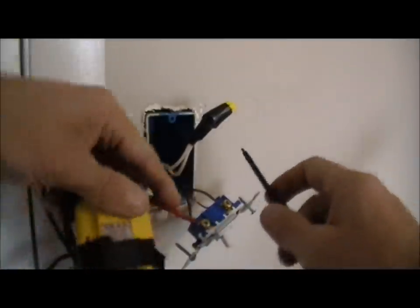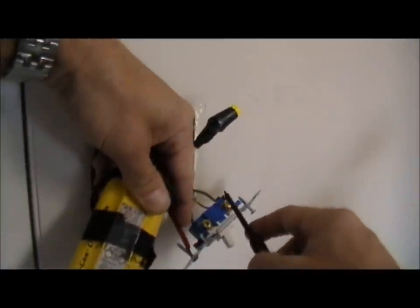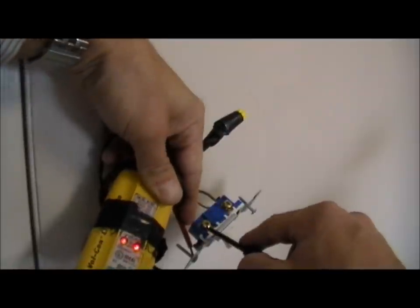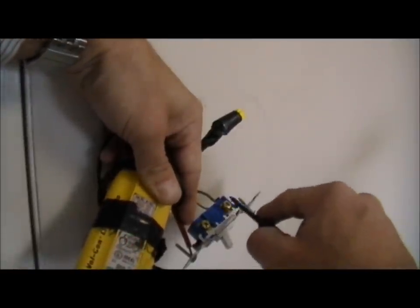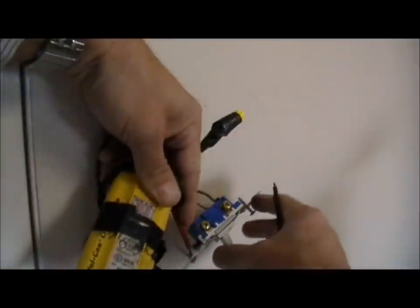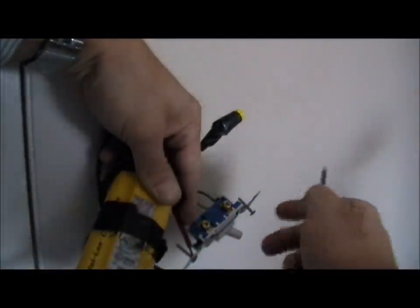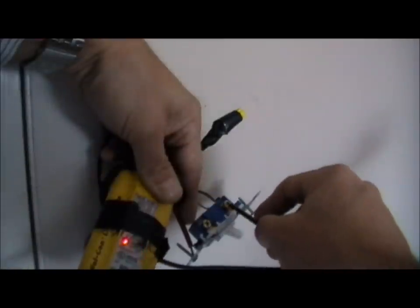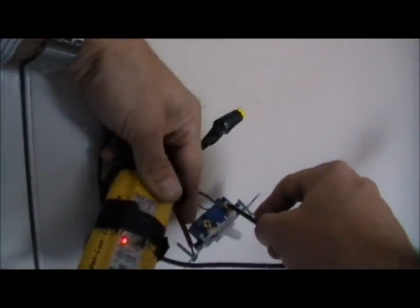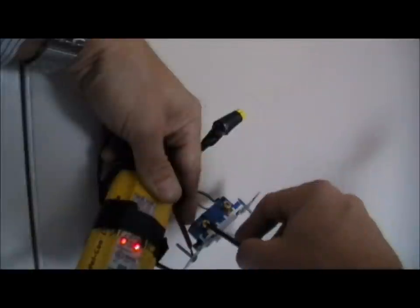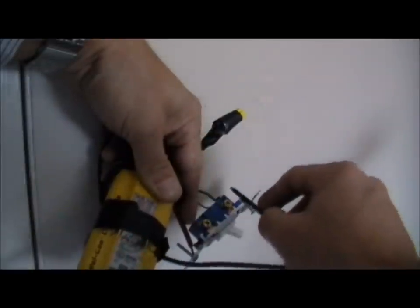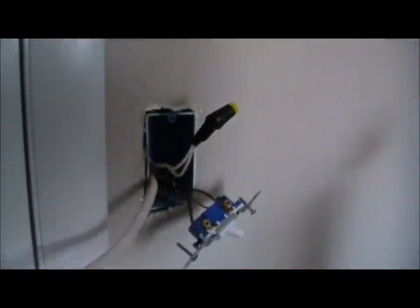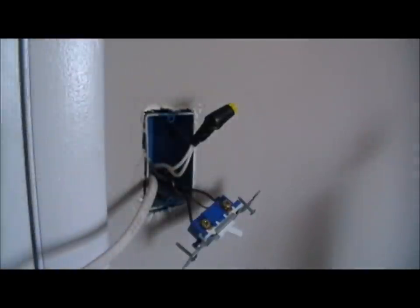You can see right there that there's power in both of these. And that's because the switch is on. When the switch is off, you'll see the lights go out. That one's hot. That brings the power in. And that's the wire that goes to the light. And it's not reading hot. So that's the power in, this wire here, and that's the power out to the light.